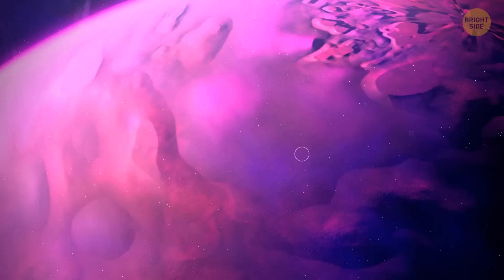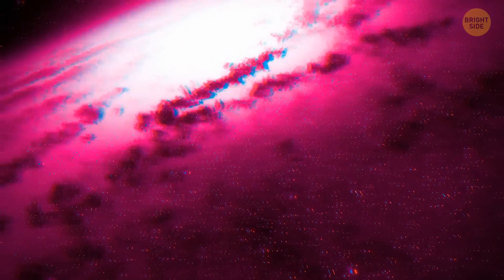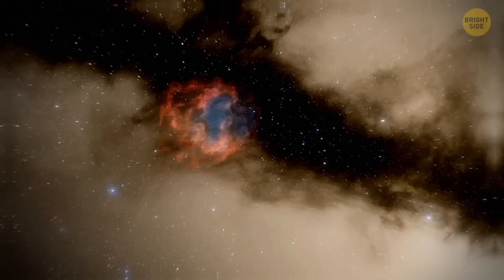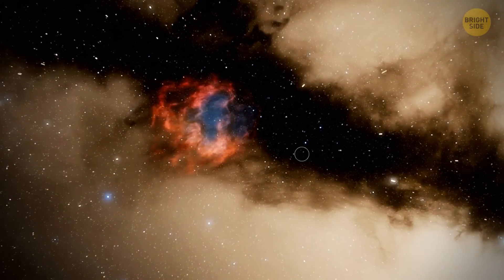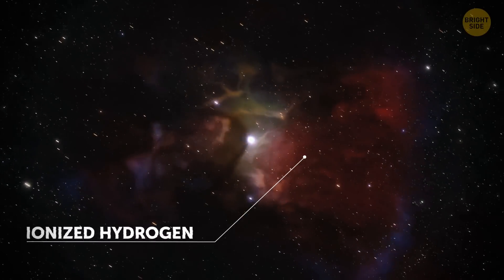When you heat something up, it radiates that energy away in a certain way. In most cases, galaxies have just a couple of areas where stars are forming, at regions where gas is collapsing. A bubble that surrounds that area contains ionized hydrogen.